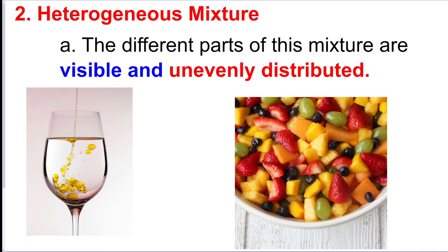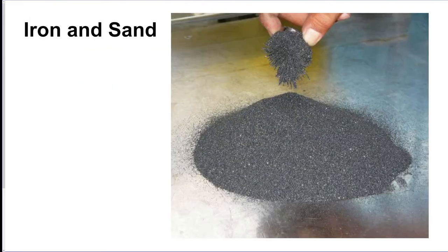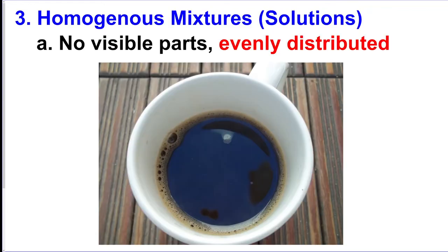There's what we call a heterogeneous mixture, which means that the parts are visible and they're unevenly distributed — you can see they're randomly mixed together. Examples include iron and sand, or trail mix.